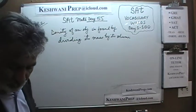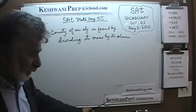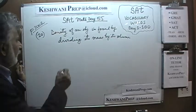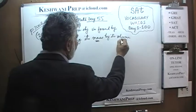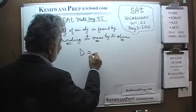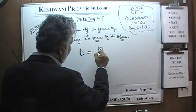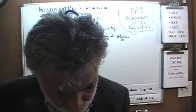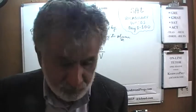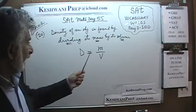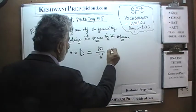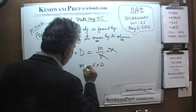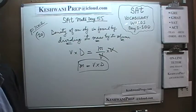Yesterday we stopped at number 9 and we are going to pick up from number 10. Question number 10 says that the density of an object is found by dividing its mass by its volume. So density equals mass divided by volume. The question asks which equation gives the mass in terms of density and volume. If you are looking for mass, simply multiply both sides by volume — mass is equal to volume times density. It is that simple.